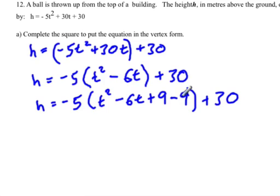Now we're going to take the negative 9 out of the bracket. And so if we take it out of the bracket, we're going to have to pay attention to the number in front, the a term here, which is negative 5, so negative 5 times negative 9 is positive 45.